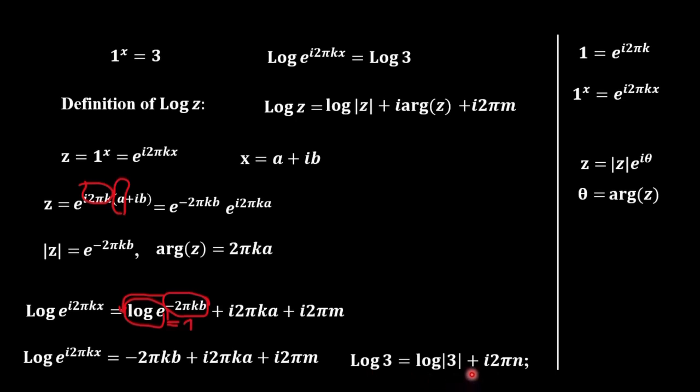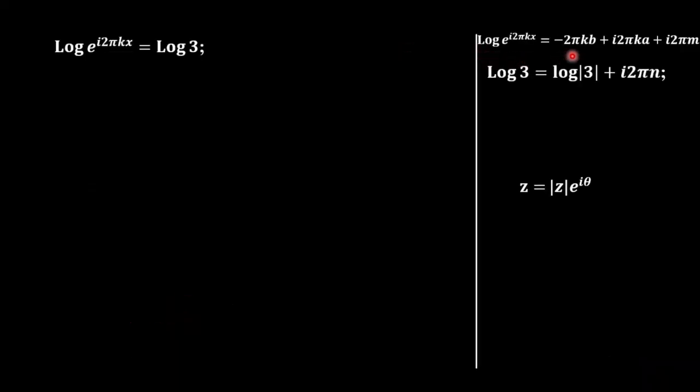Argument here is absent, because for real numbers, argument equals 0. So, now we know the left-hand side and the right-hand side of this equation. We can plug in here what we know and equate both sides.